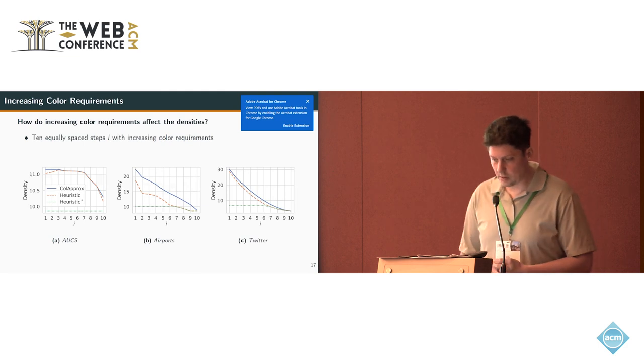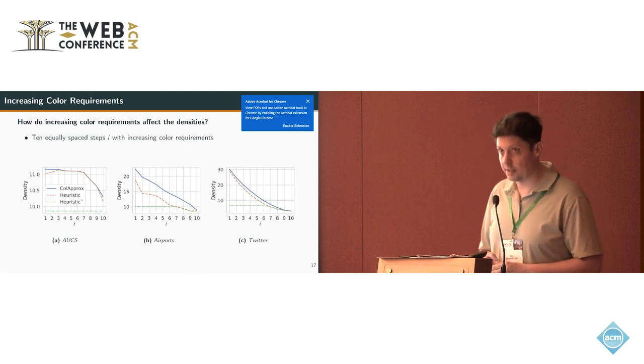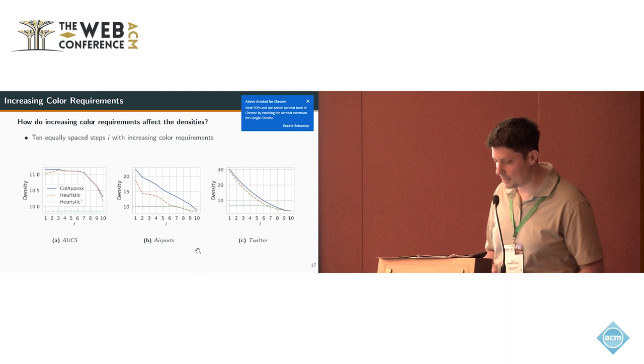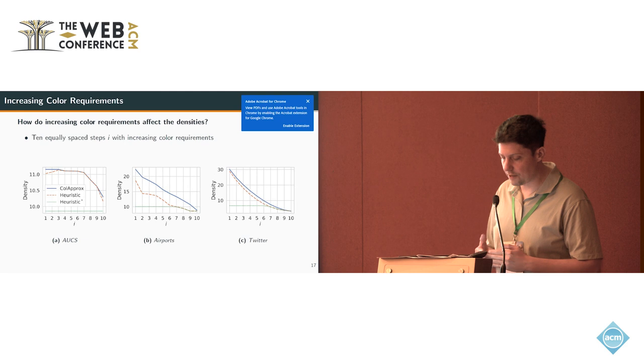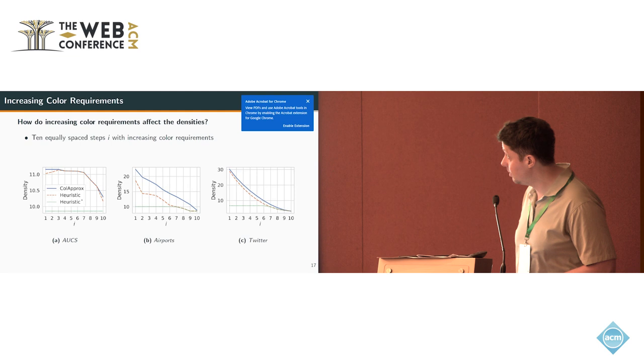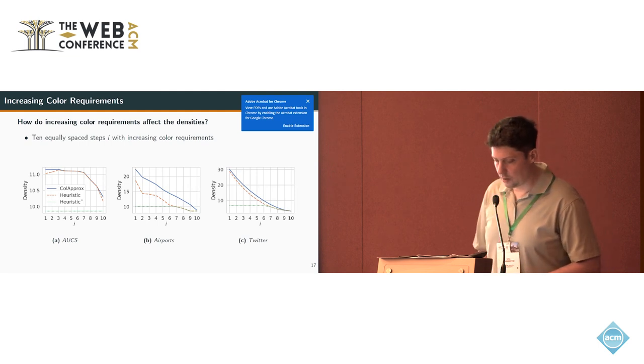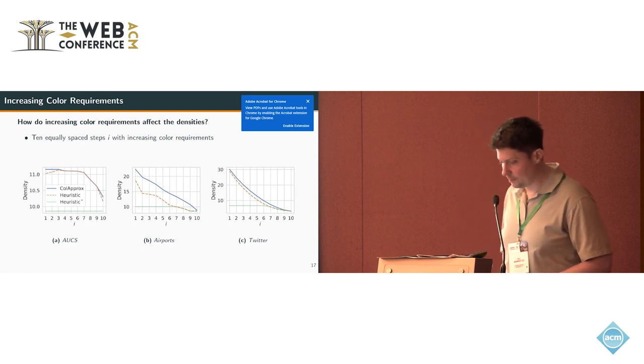Then we took a look at how increasing the color requirements affects the density. As we expect, the density decreases because we have to include a larger fraction of the graph into the solution. However, our approximation algorithm still beats the heuristic also in larger datasets and for increasing color densities.